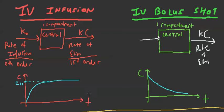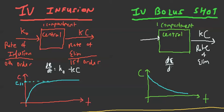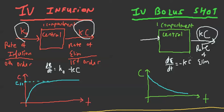The overall rate for IV infusion was dX/dT = K0 minus KC. For IV bolus, the overall rate is dC/dT = negative KC, because that's all we have — we don't have K0. Here are the graphs of IV infusion versus IV bolus. For IV infusion, concentration goes up slowly to steady state. For IV bolus, the drug doesn't start at zero — it starts at a peak plasma level and then drops over time, because the only thing happening is elimination.